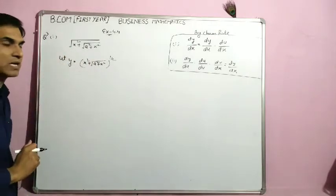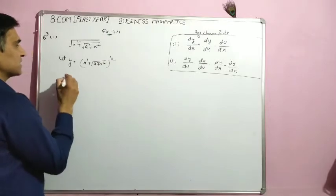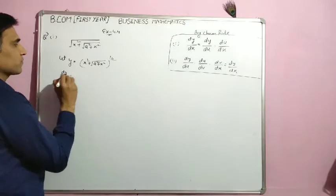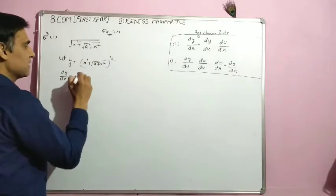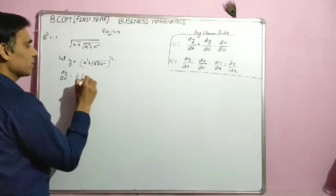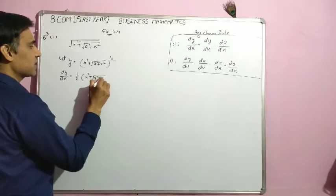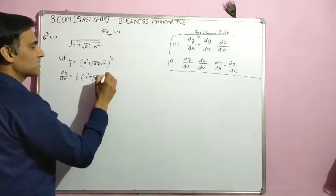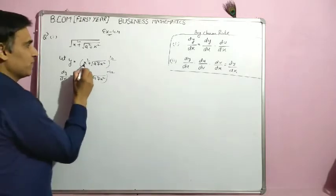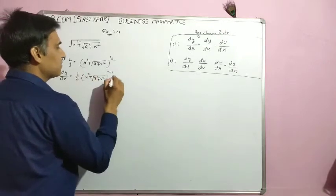Square root की जगह हमने 1/2 power कर लिया है। यह composite function है। dy/dx निकालेंगे। तो यहाँ पर exponent में 1/2 आ जाएगा: (x² + a² + x²) raised to power (1/2 − 1), यानी −1/2।